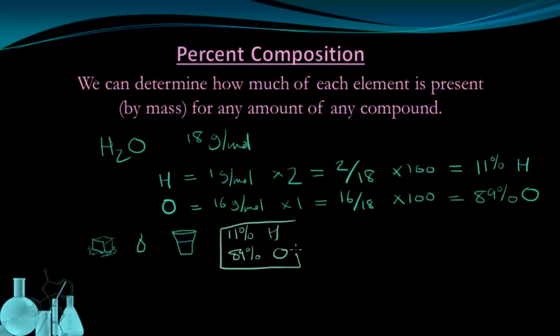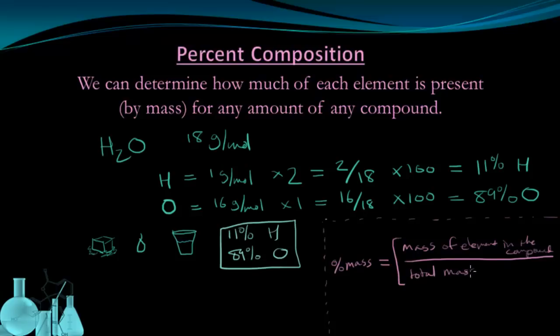That is the percent composition of water. More generally, the percent mass of a given element in a compound is equal to the mass of that element in the compound divided by the total mass of the compound. And then this fraction put together is multiplied by 100 to convert it into a percentage.